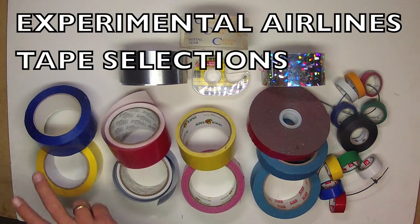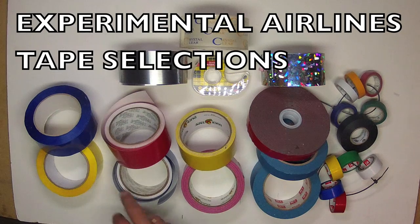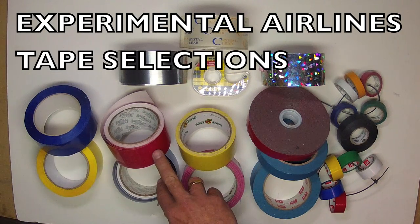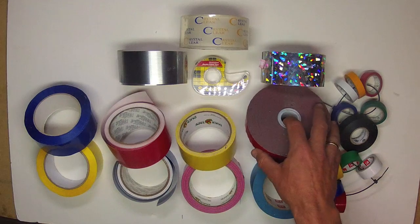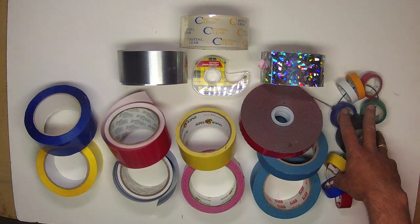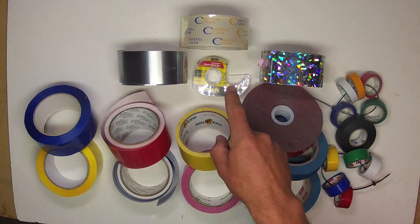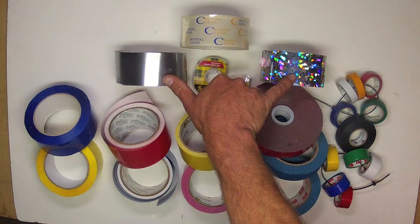In this video I'll show you many of the tapes used in the Experimental Airlines construction technique. They are colored packing tape, exterior vinyl tape, duct tape, two-sided heavy duty mounting tape, masking tape, vinyl electrical tape, two-sided scotch tape, polypropylene label covering tape, and holographic metallic decorative tape.